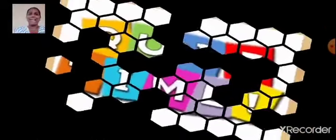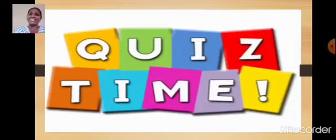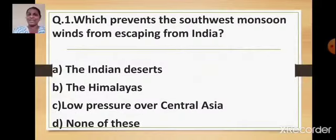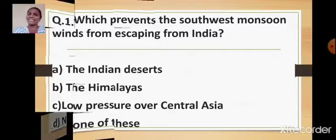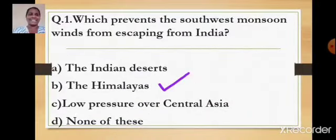Now it's time for a quiz. Question number one: Which prevents the southwest monsoon winds from escaping from India? Option A: The Indian deserts. Option B: The Himalayas. Option C: Low pressure over Central Asia. Option D: None of these. The correct answer is Option B — the Himalayas prevent the southwest monsoon winds from escaping from India.